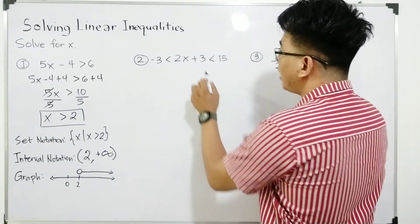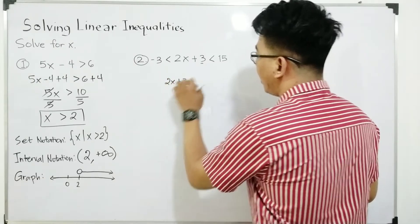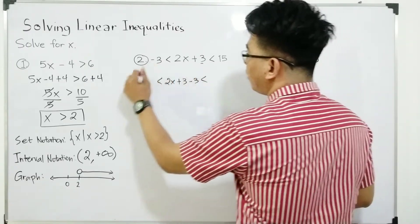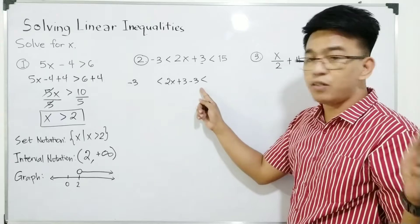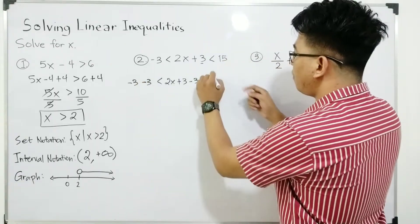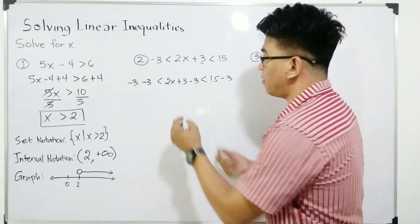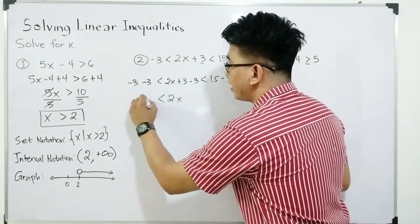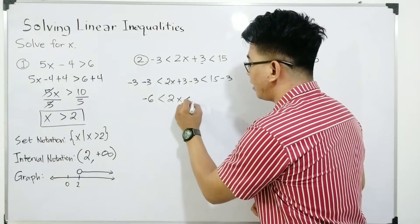First, we need to eliminate 3. Copy 2x plus 3, and to eliminate 3 you need to subtract 3. Copy the symbols. On the left side we have negative 3 minus 3, and on the right side copy 15 then minus 3. Simplify: 3 minus 3 is 0, so you have 2x is greater than negative 3 minus 3 which is negative 6, and 15 minus 3 is 12. So this becomes: negative 6 is less than 2x which is less than 12.